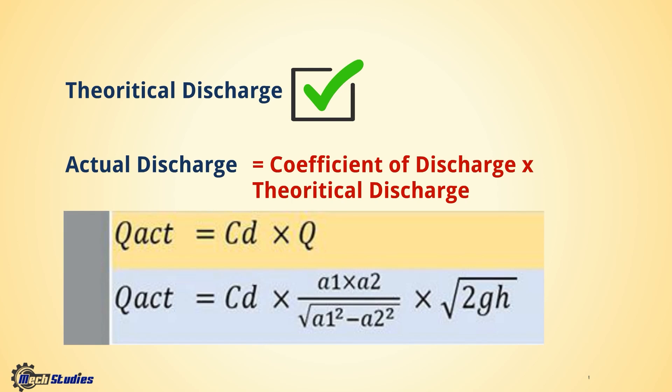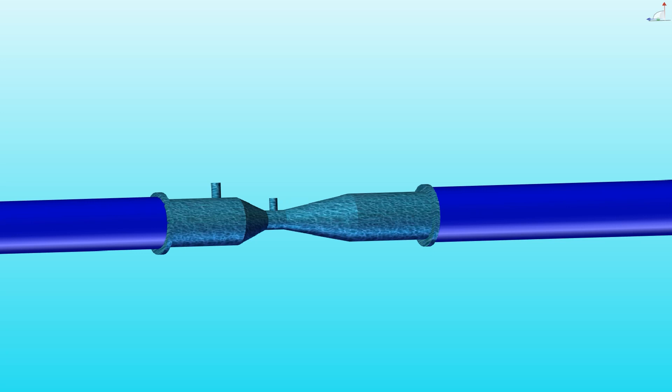The actual discharge is always less than the theoretical discharge due to losses. So Q_actual = Cd × Q_theoretical, giving Q_actual = Cd × (a1·a2 / √(a1² − a2²)) × √(2gH), where Cd is the coefficient of discharge. It is always less than 1 — normally used as 0.98 or 0.99. This Venturimeter was used in a horizontal pipe, but pipes can also be inclined or vertical.